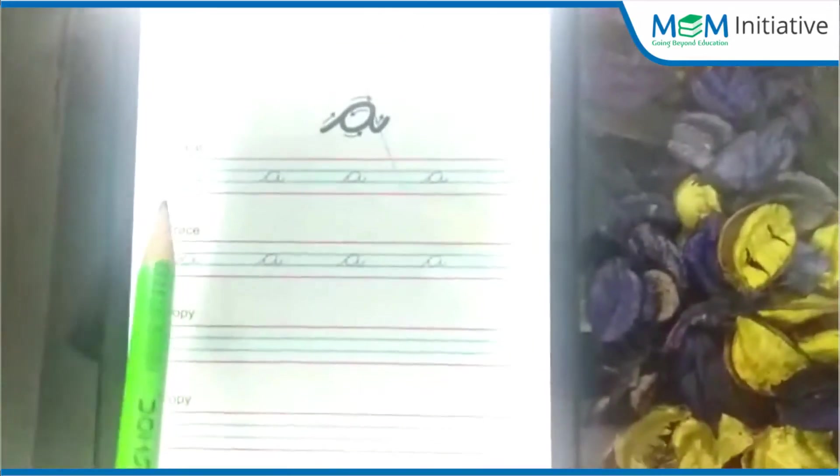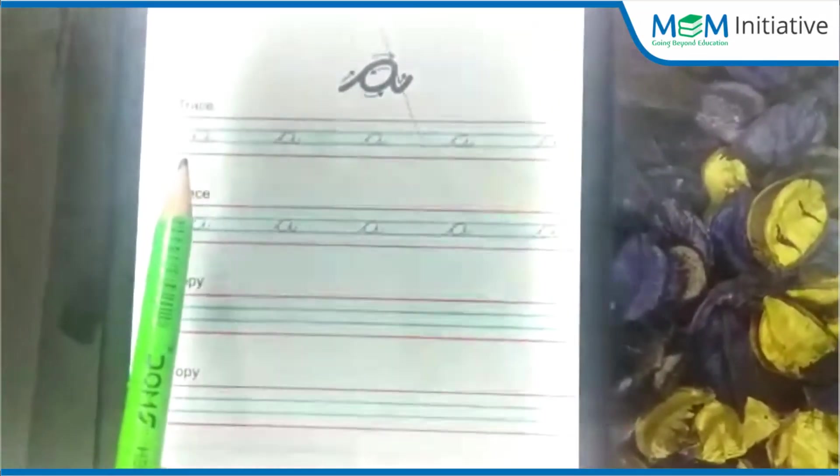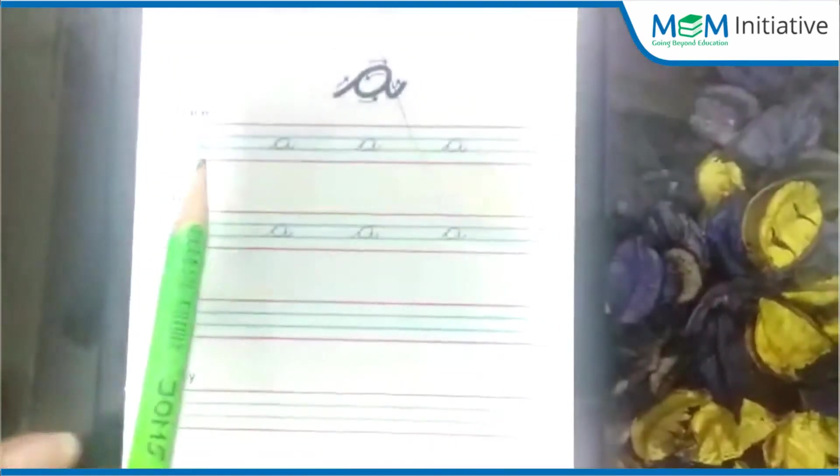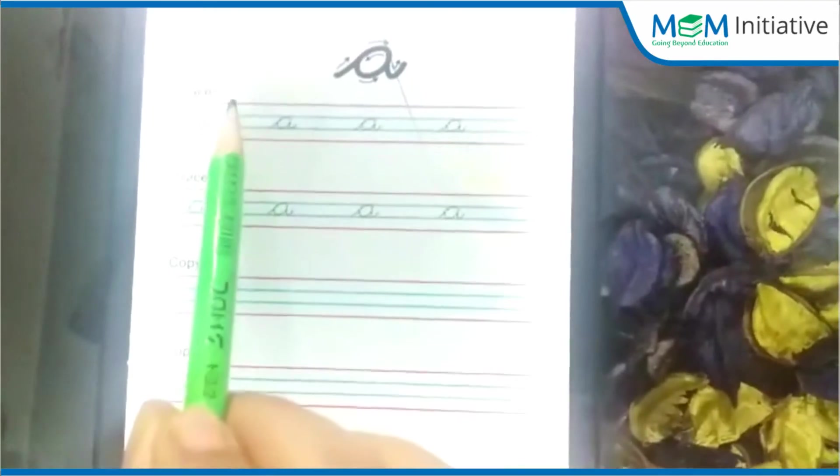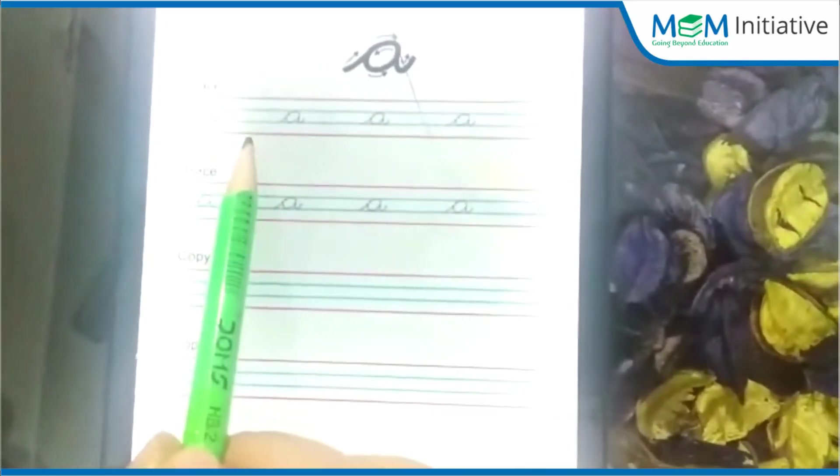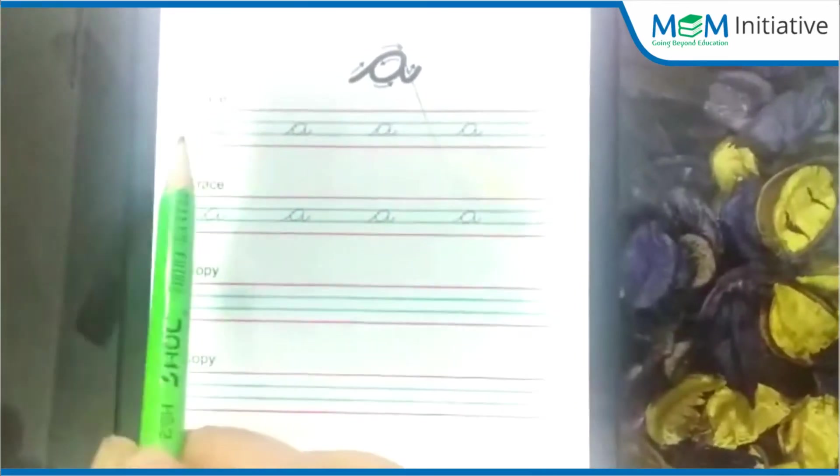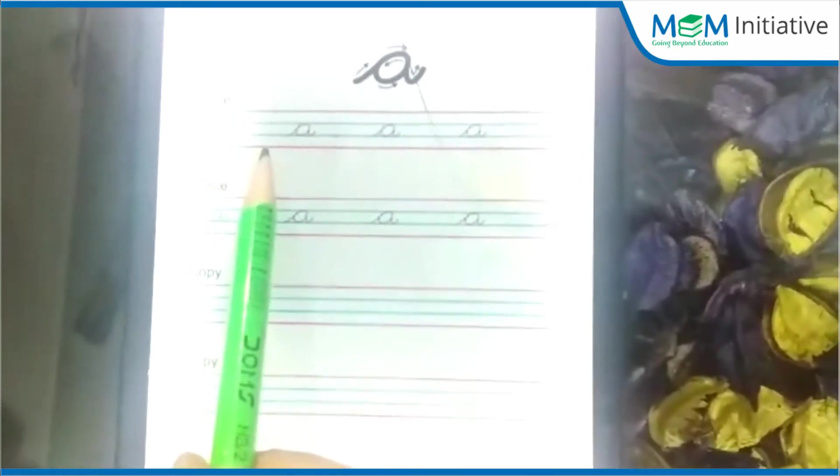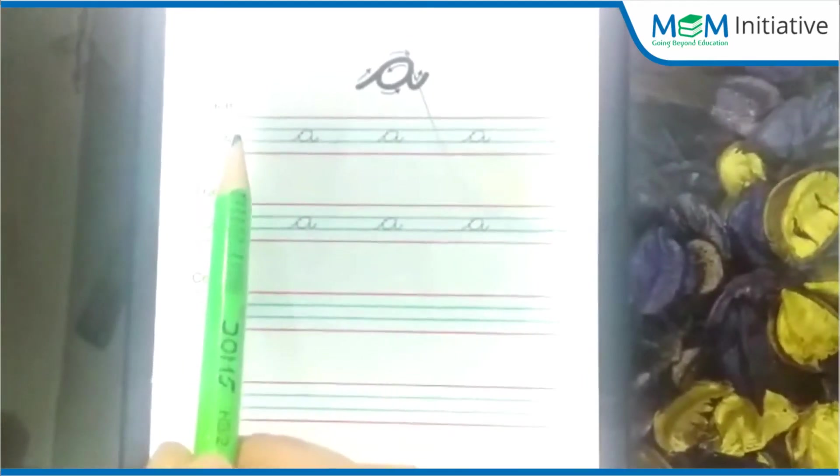Here you can see dots. One thing you have to be very careful - you have to write this A within these two central lines only. Can you see these four lines? The first one is red, then blue, again blue, and then red. You have to write this letter within these two central lines.